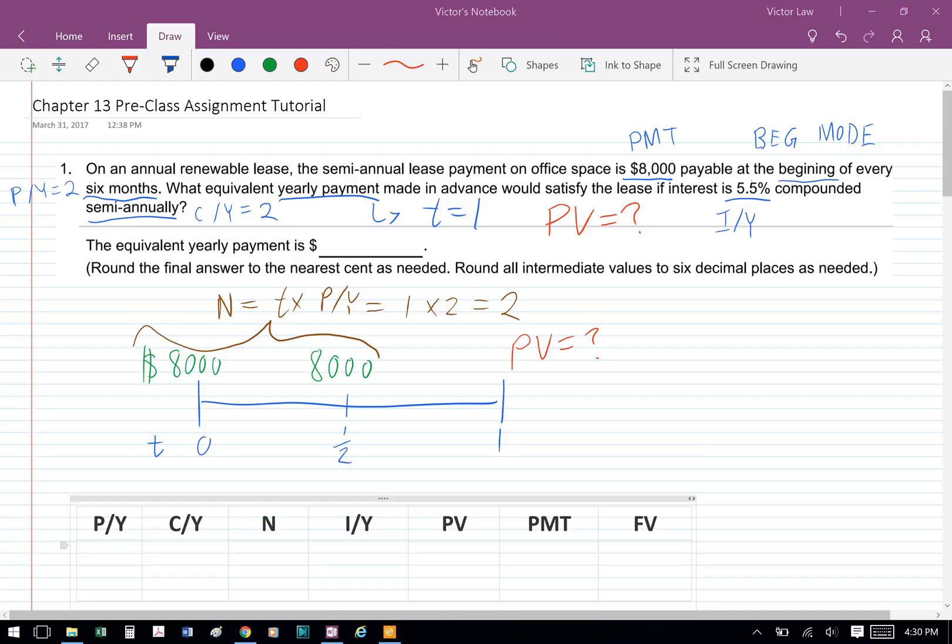From a timeline perspective, we're looking at a one-year time frame, and there are two payments of $8,000. And we're solving for the present value of those two payments. So notice those two payments are made at the beginning of the period, so they're made at time 0 and time T equals 1.5.